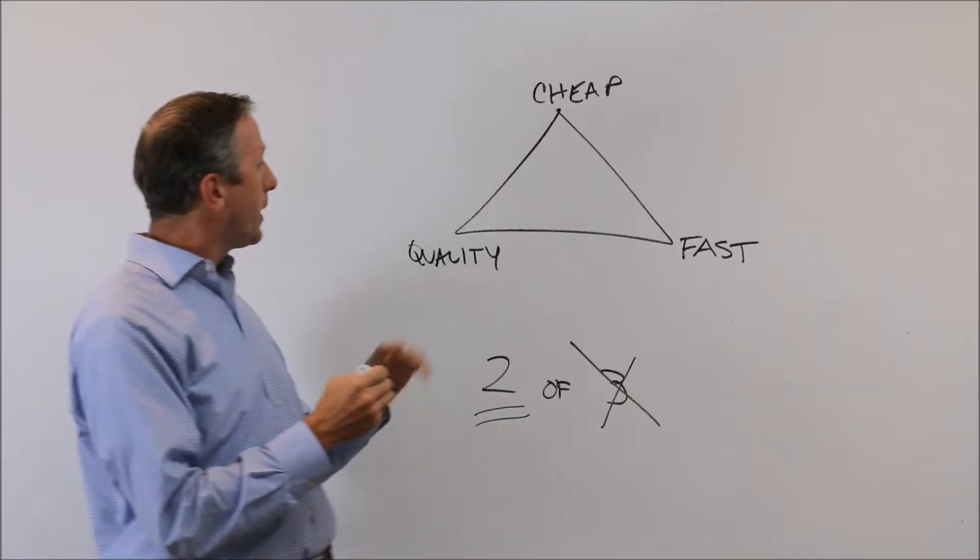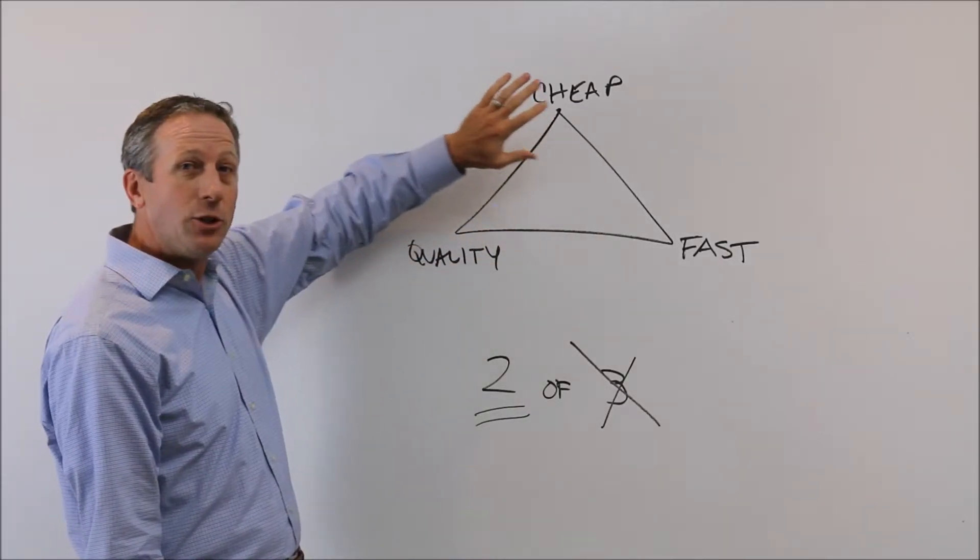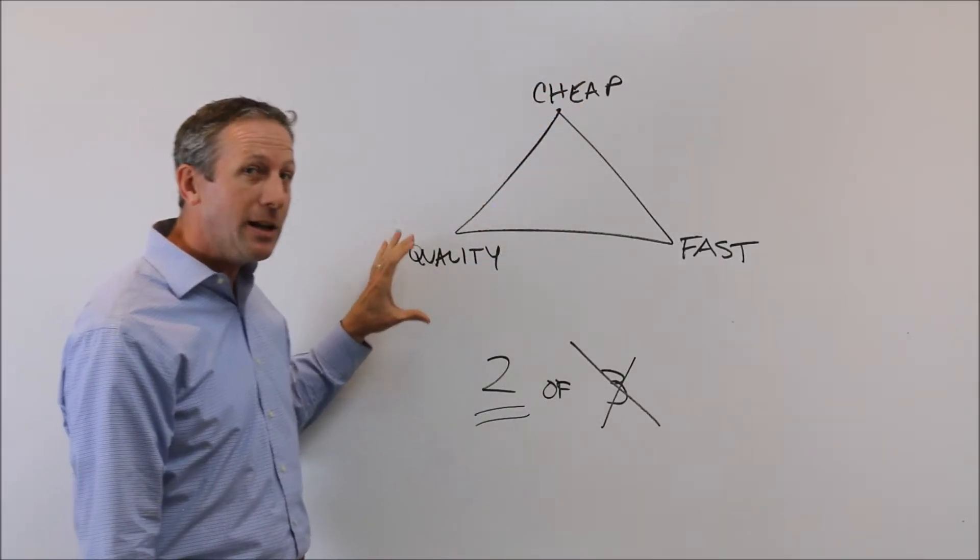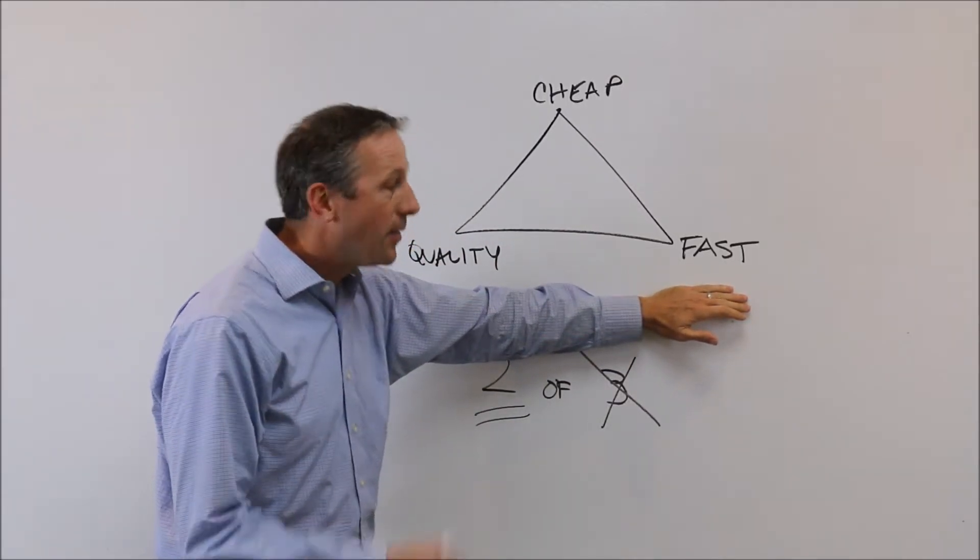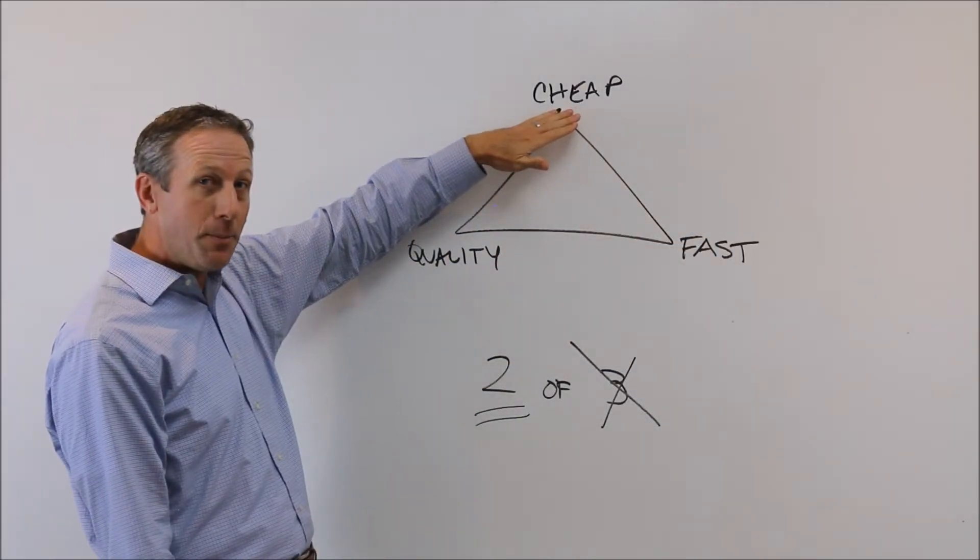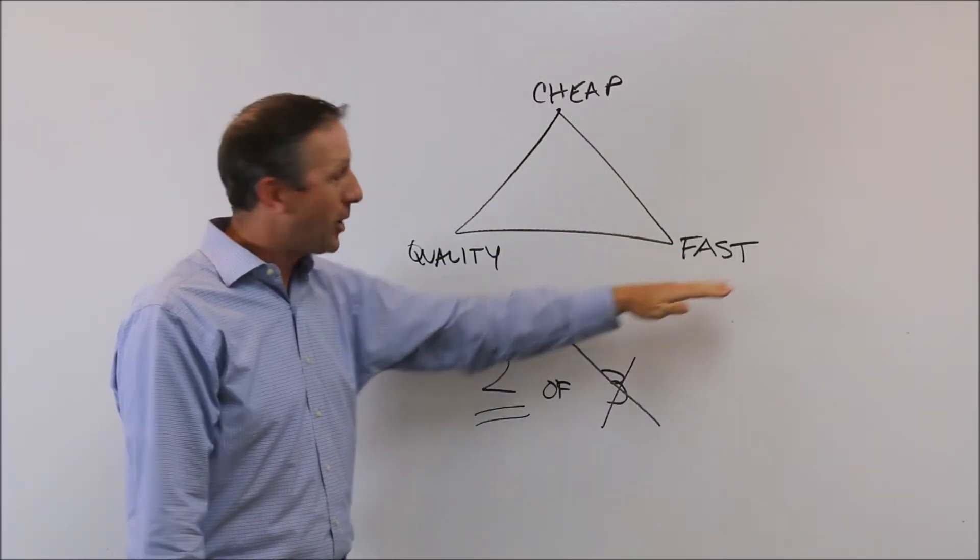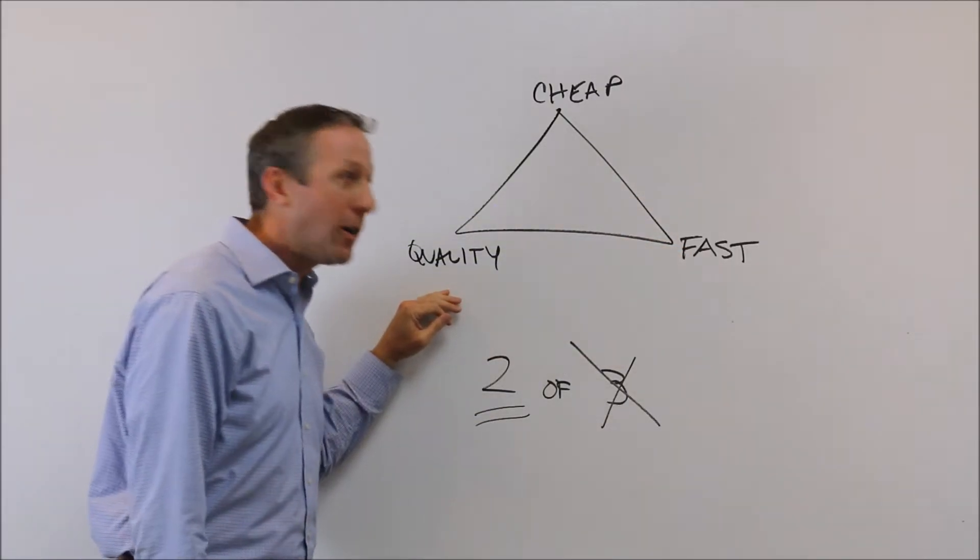So if you think about it, if you want to go buy something new, and you want something cheap, and you want something that's of high quality, you can do that. However, the odds are it's not going to be fast. The second thing is you can get something that's cheap, and you can get something really quickly, but odds are it's not going to be of high quality.